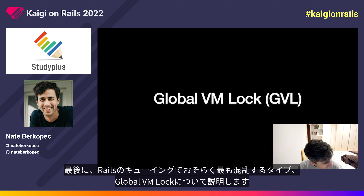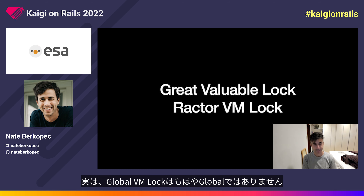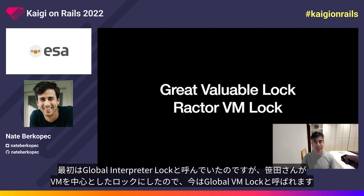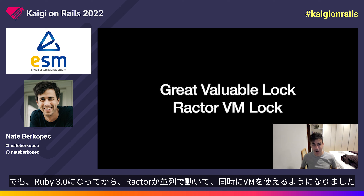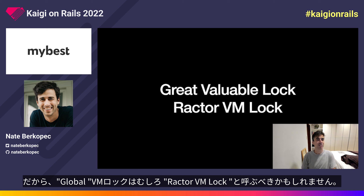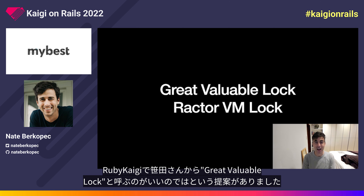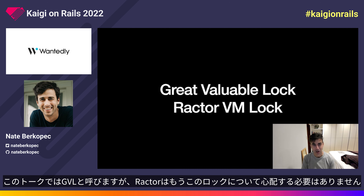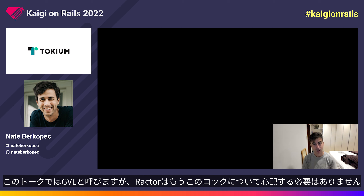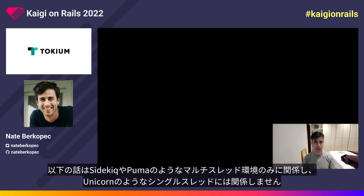Now let's talk about the last and probably the most confusing type of queuing in Rails: the global VM lock. The VM lock is no longer truly global — we used to call it the global interpreter lock, then Sasada-san made the lock around the VM instead. After Ruby 3.0, Ractors now run in parallel and use the VM at the same time, so it's more of a Ractor VM lock. Sasada-san suggested at RubyKaigi that we call it the 'great valuable lock,' which I think is really funny. We're only talking about multi-threaded environments such as Sidekiq or Puma; in Unicorn you only use one thread, so you won't see any of this behavior.